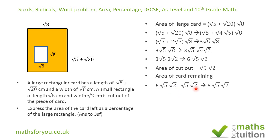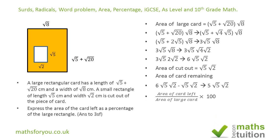6x minus x gives us 5x, so 6√5√2 minus √5√2 equals 5√5√2. That is the area remaining after the cutout.